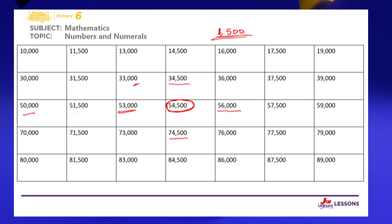We could have a lot of identified numbers. When a number is identified, you need to read the numbers around it — on top, at the bottom, on its left, and on its right. Pick any number; you can find the one on top, at the left, at the right, or at the bottom. For example, for 76,000: on top is 56,000, on its left is 74,500, at the bottom is 86,000, and on the right is 77,500.